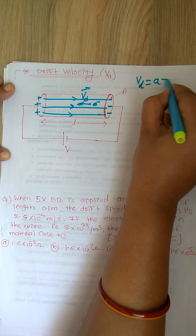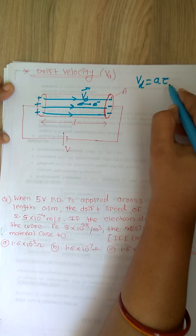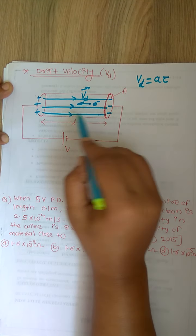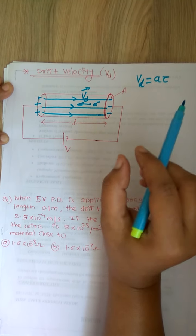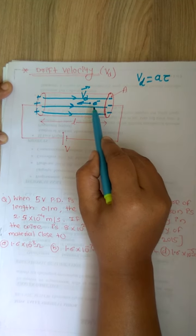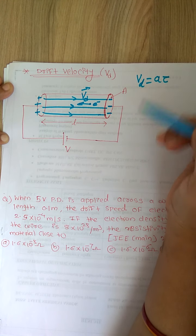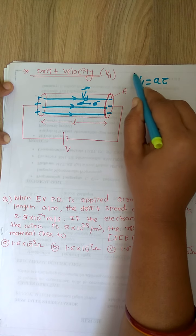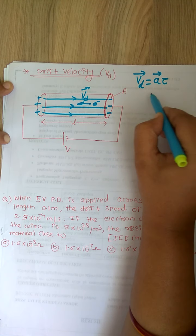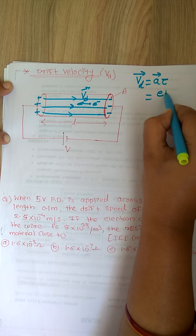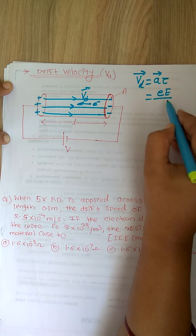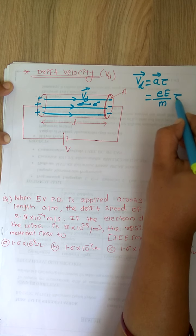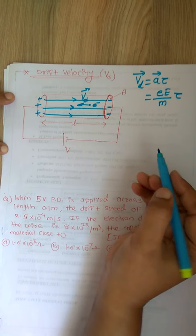We can find drift velocity as acceleration multiplied by tau, where tau is the relaxation time — the time interval between two successive collisions. When electrons move inside the conductor, they collide with the nucleus. The acceleration is force upon mass, and the force applied by the electric field on the electron is eE divided by mass of the electron, multiplied by relaxation time.